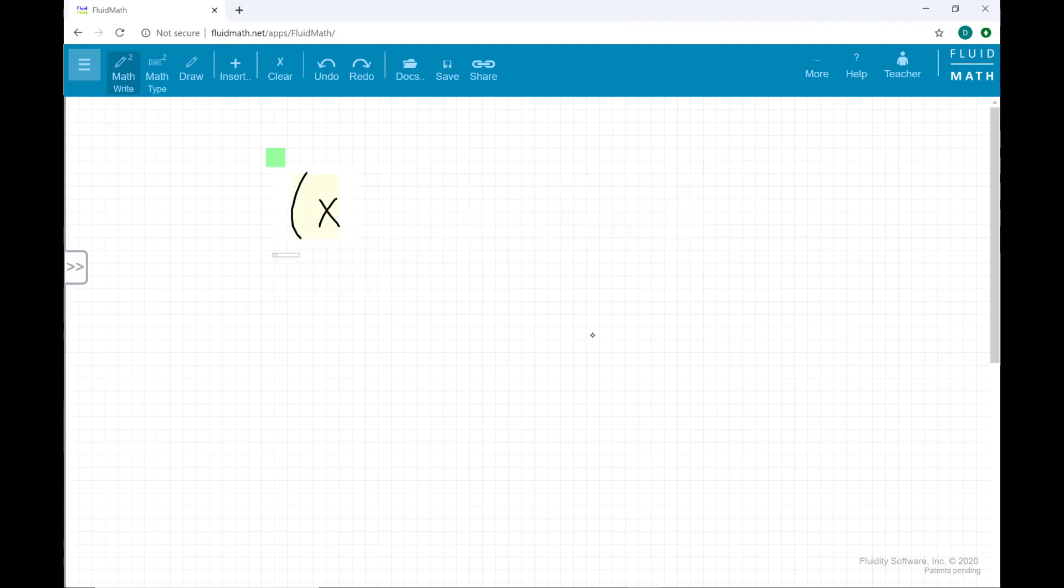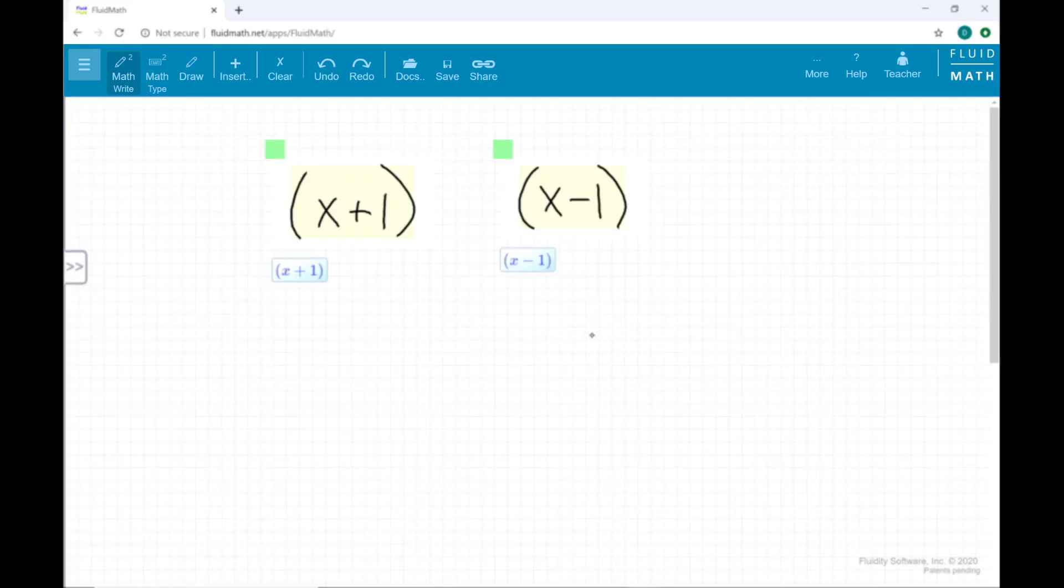If you have written numbers, variables, and symbols close together, you will notice that a yellow box appears behind them. If you write with more separation between them, you will notice that each has a separate yellow box.